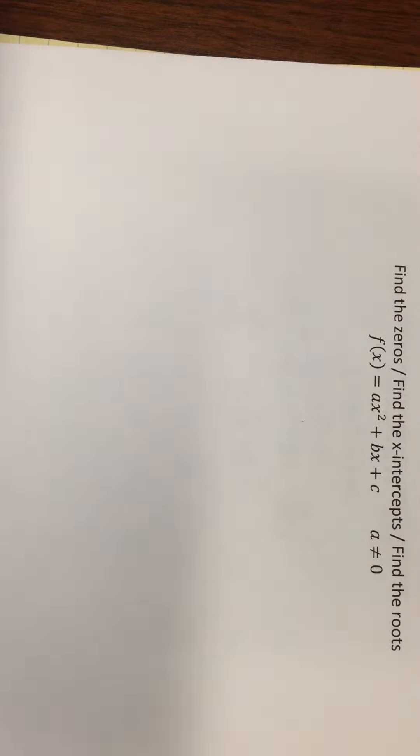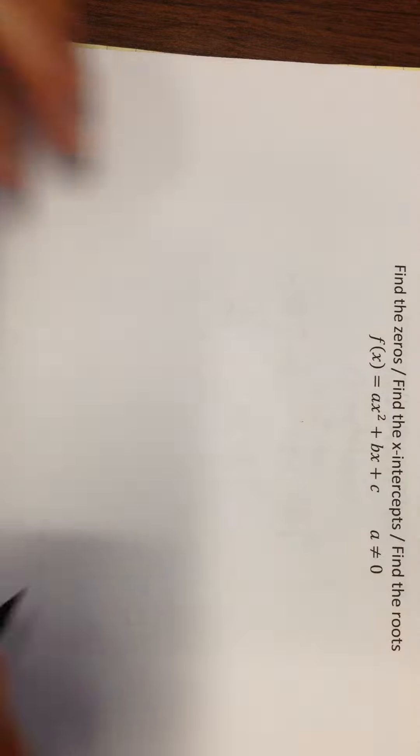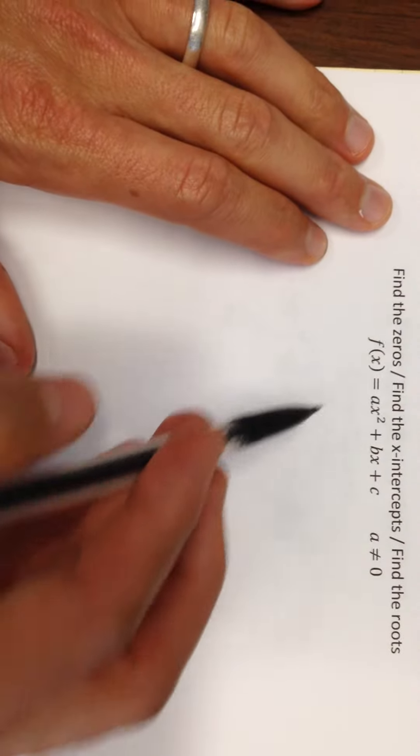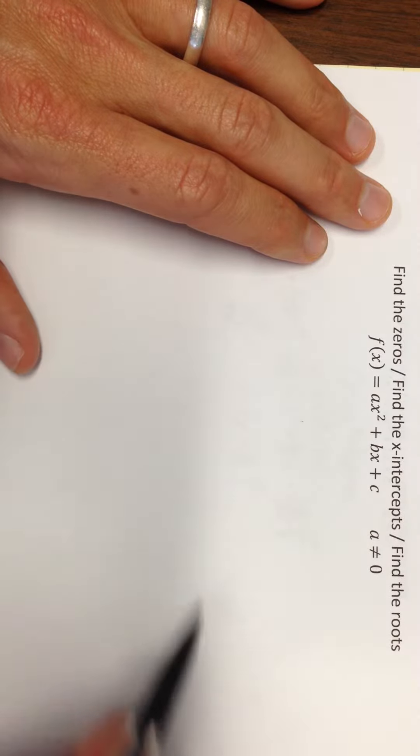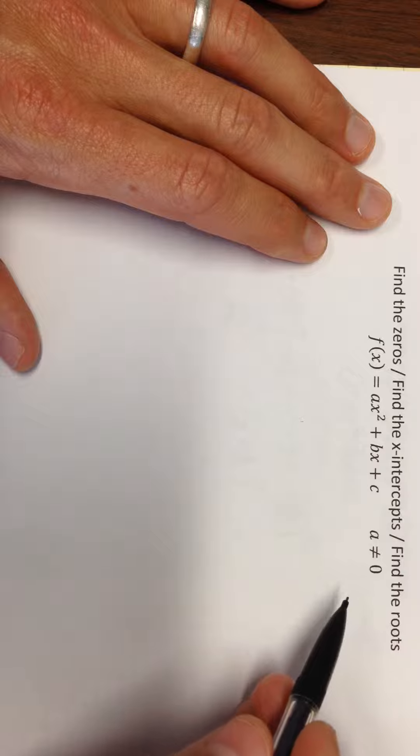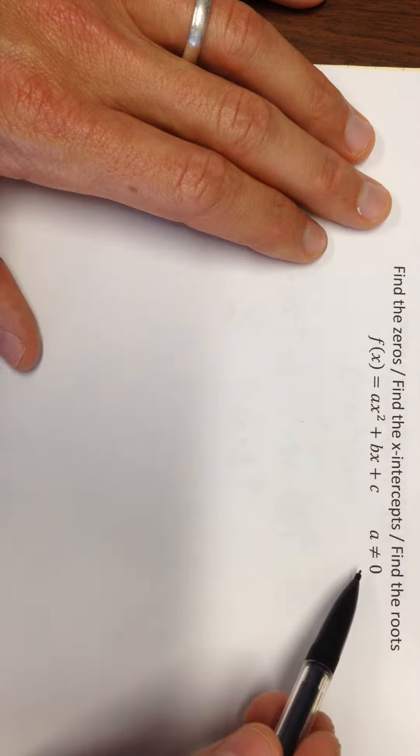Okay, in this problem we're going to find the zeros, or find the x-intercepts, or find the roots - all of those are instructions to do the same thing of the general quadratic f(x) = ax² + bx + c, where a is not equal to zero.